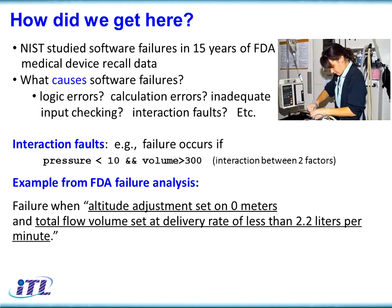About ten years ago, we had a project looking at what causes failures in systems. We reviewed 15 years of FDA medical device recall data and looked at what causes the problems. One of the things that stuck out was what we call interaction faults. For example, a failure that occurs if the pressure is less than 10 for some device — say an infusion pump — and the volume is greater than 100. Two separate factors are involved in that failure. An example at the bottom: a failure when the altitude was set to zero meters and the total flow was less than 2.2 liters per minute — two separate factors involved.